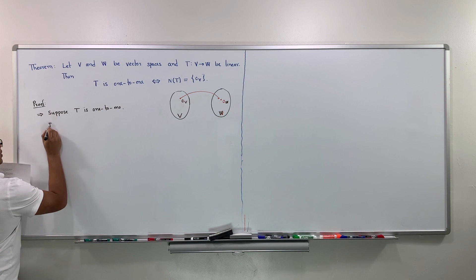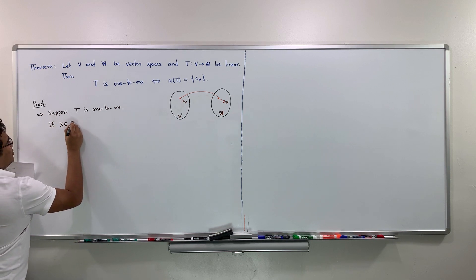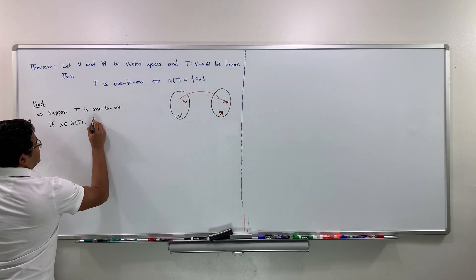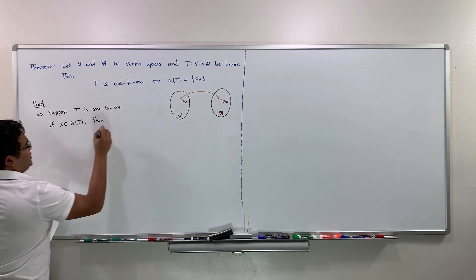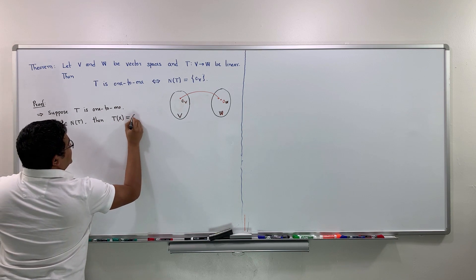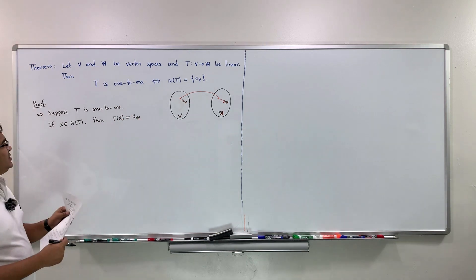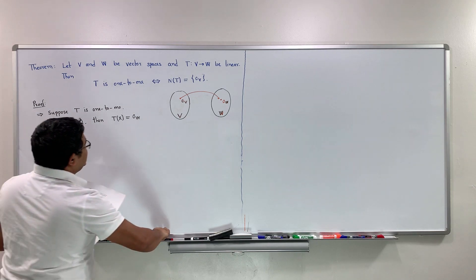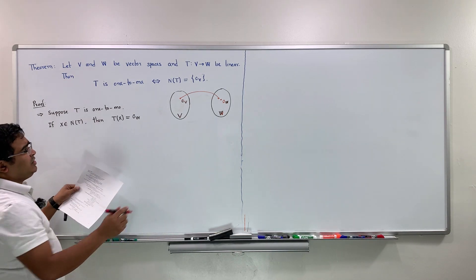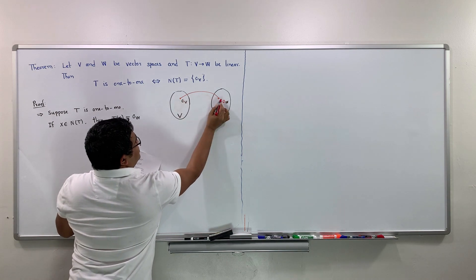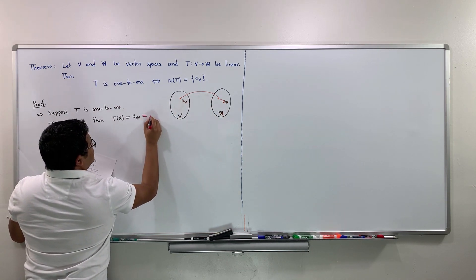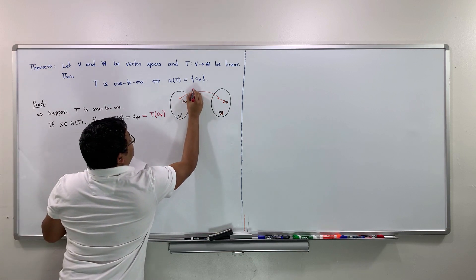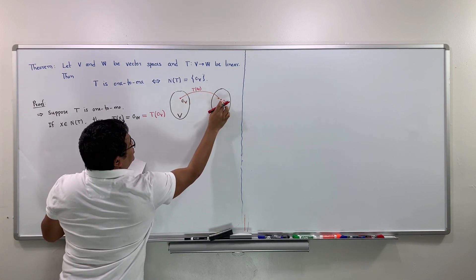If x is an element of the null space of T, then by the definition of the null space, T(x) equals the zero vector in W. We also know that the zero vector in V always maps to the zero vector in W — that is, T(0_V) equals the zero vector in W. So we can write T(x) = T(0_V).